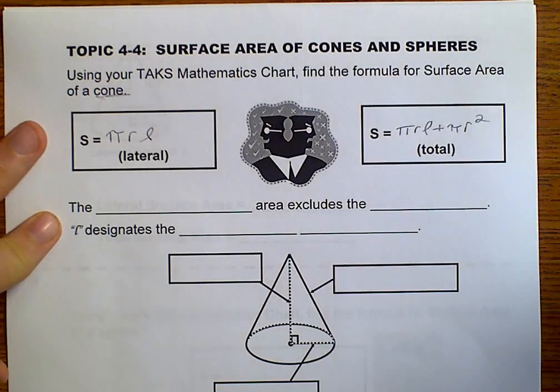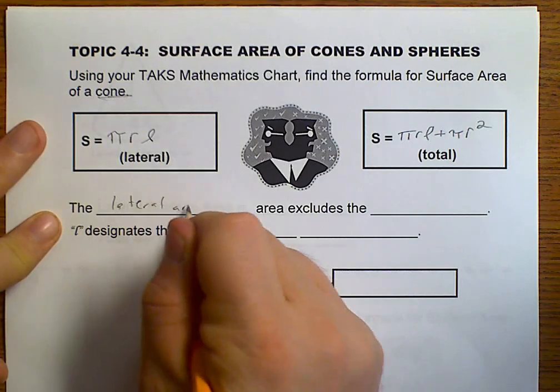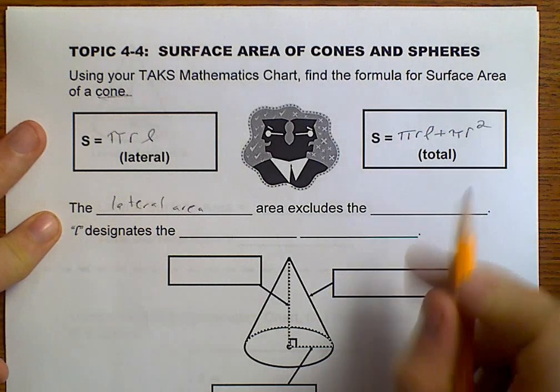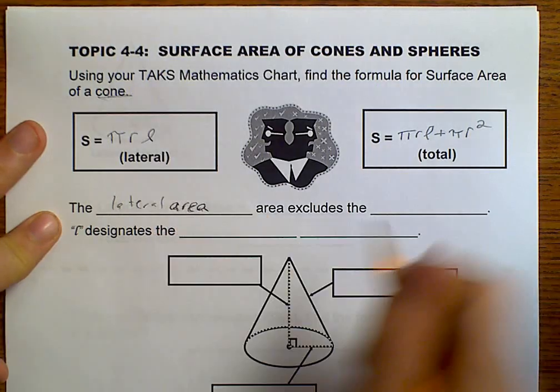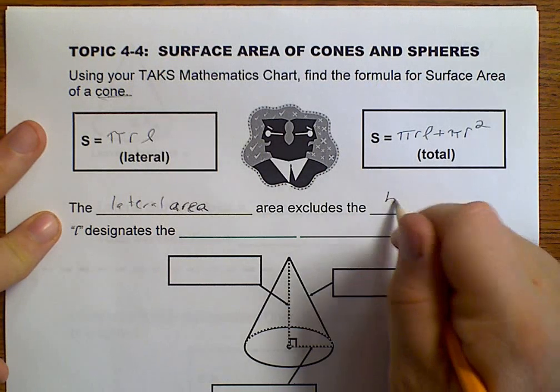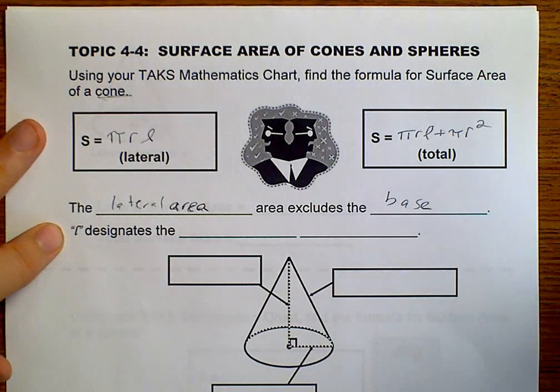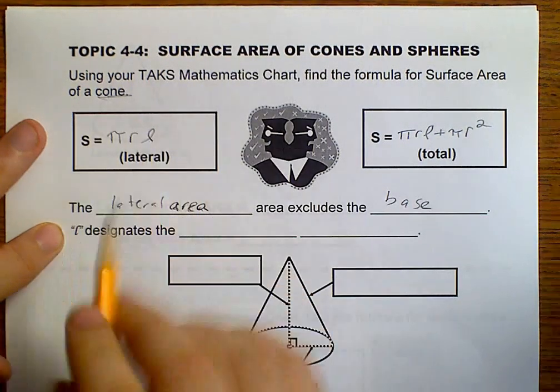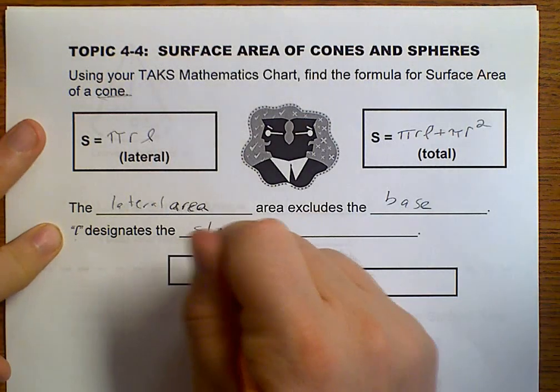Now, the lateral area excludes the base. And l, I use my l's like this, they wrote this l, but l tells you the slant height.